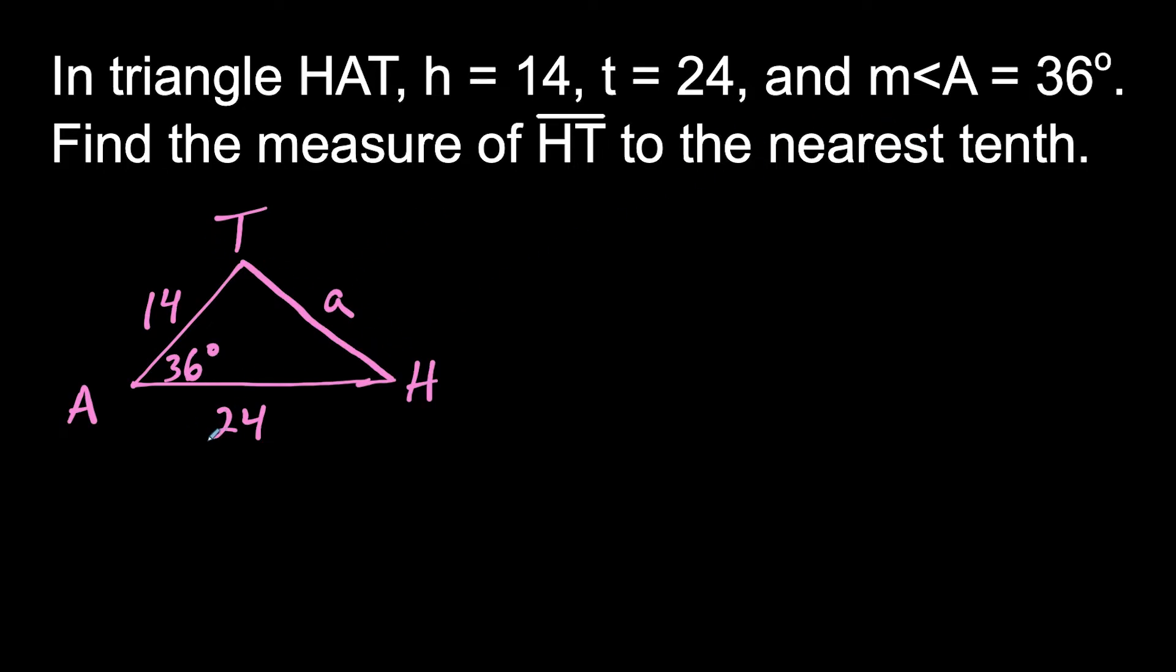So what we have here, if we're using the formula from before, we could say that we have h squared plus t squared minus 2ht times cosine of angle A equals side a squared. So now what we're going to do is just write this into the formula.